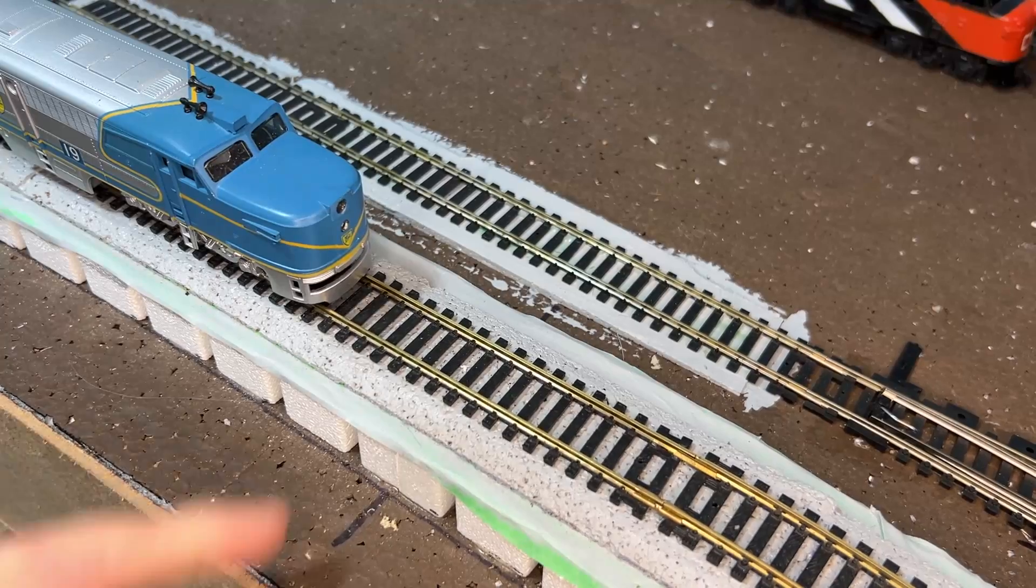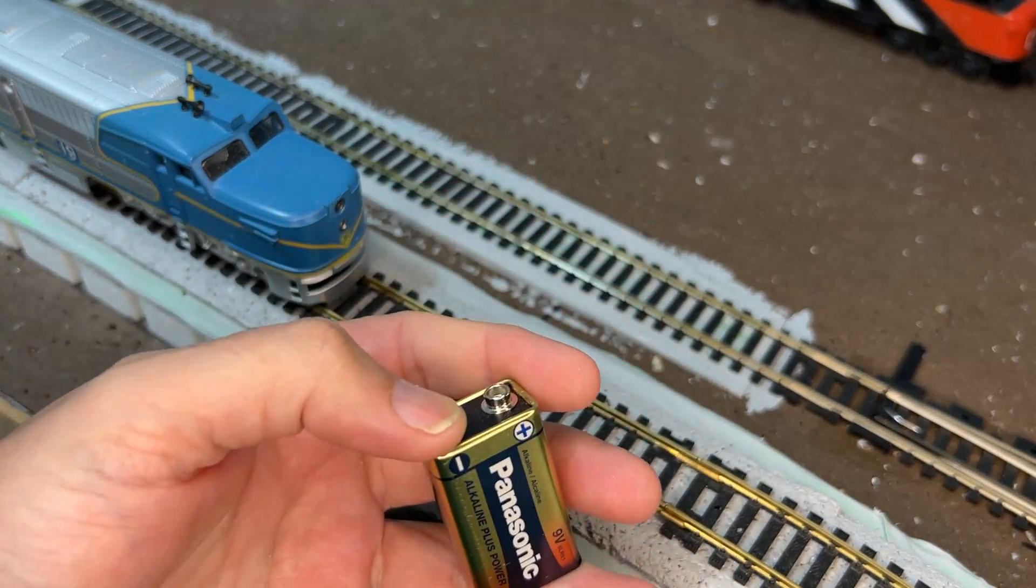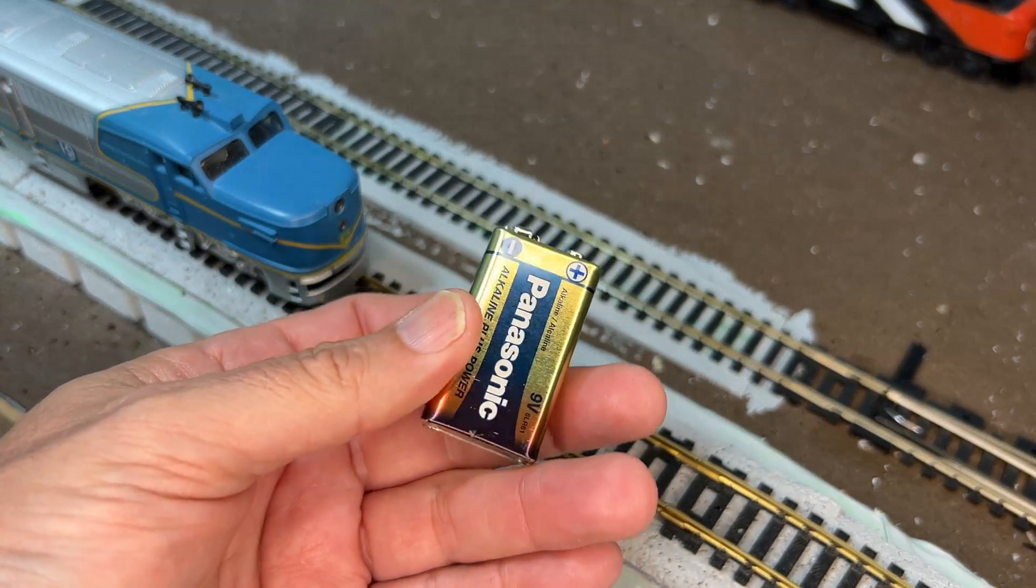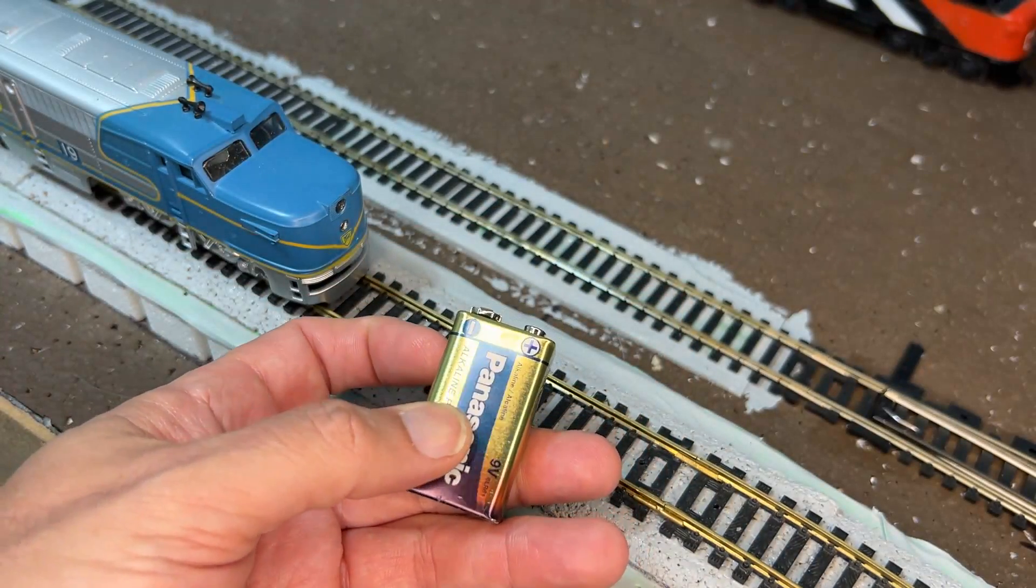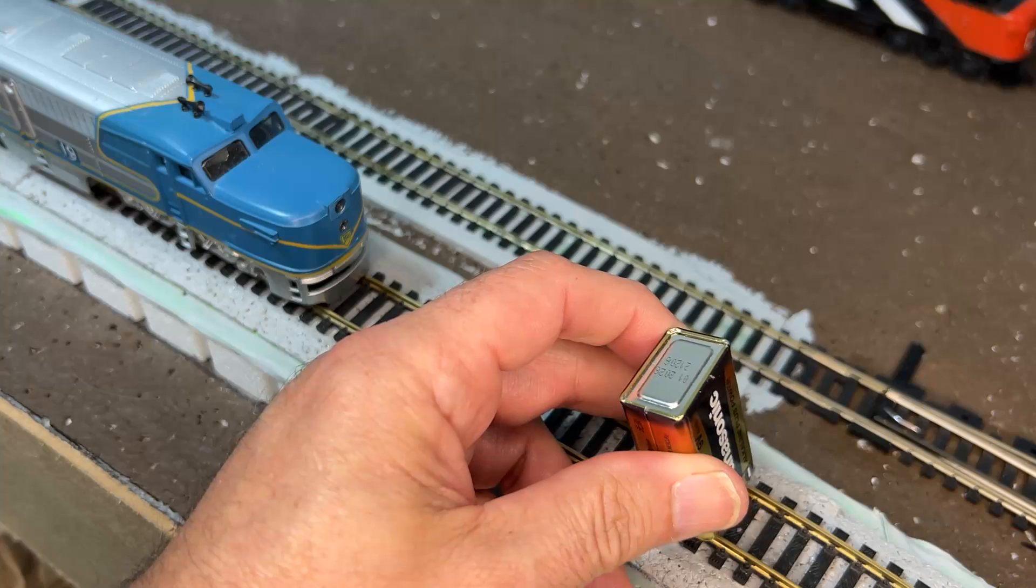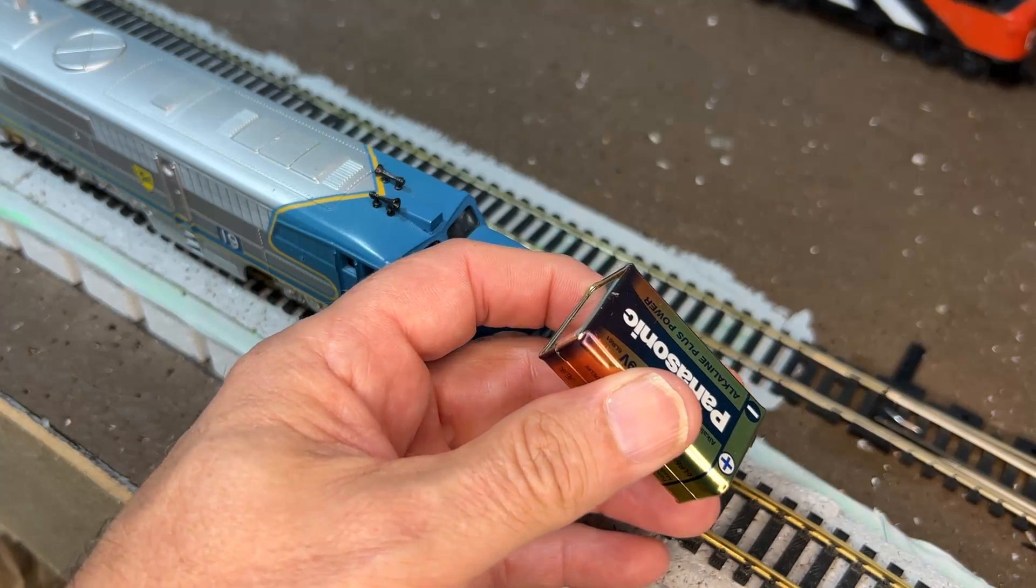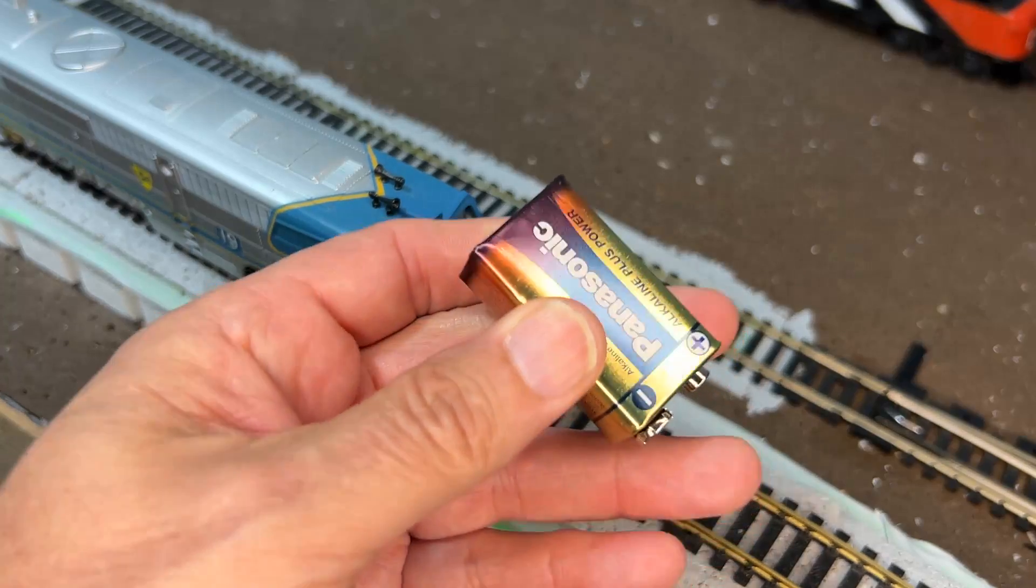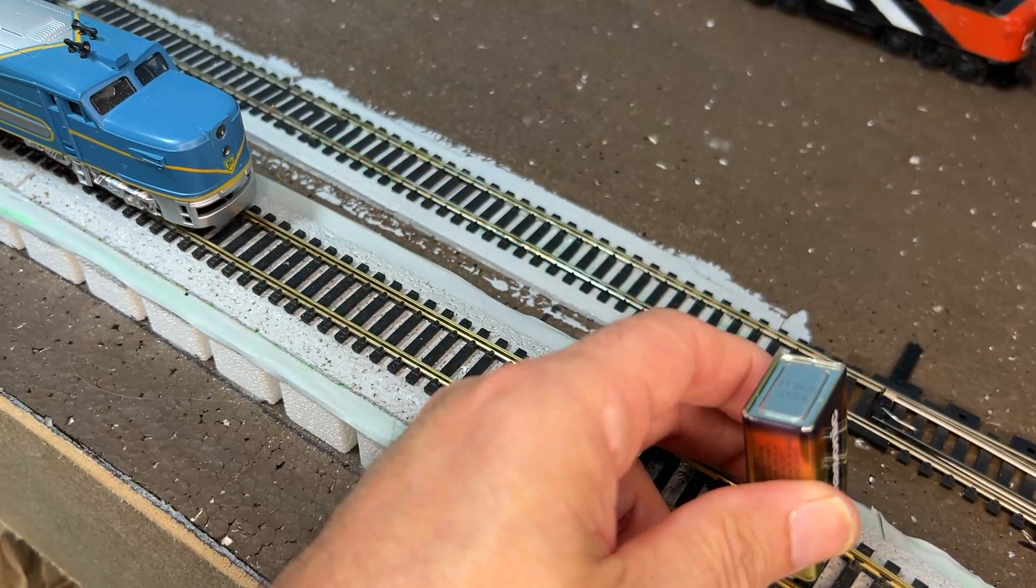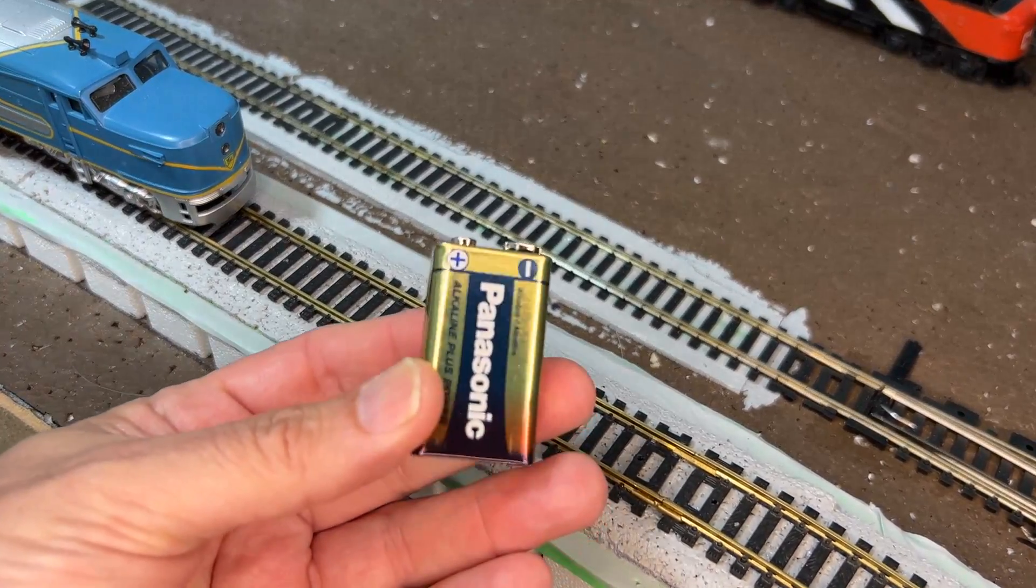Let me go over to the rails because there's something else that you need to know about. A DC controller on a DC track like this is kind of like a big adjustable battery. It'll go from zero up to whatever your controller allows, in my case 11.55. If I connect this battery to the rails, this train should move towards the battery.